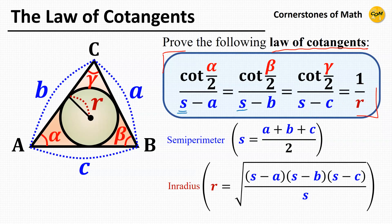Here S is the semi-perimeter of a triangle, defined as (A plus B plus C) over 2. And R is the in-radius, the radius of the inscribed circle of the triangle, which can be expressed as the square root of (S minus A) times (S minus B) times (S minus C) divided by S.